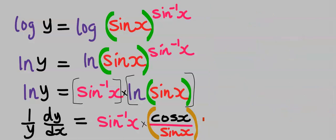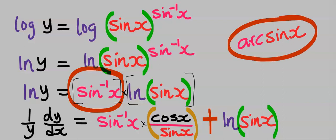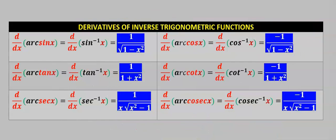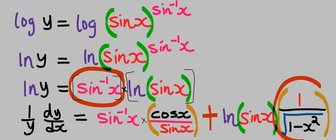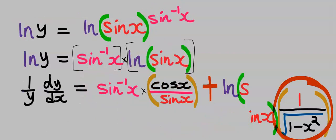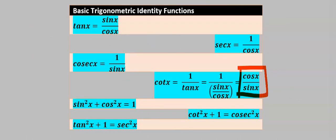Next, for the product rule we put a plus, then keep the natural log constant and differentiate sine inverse of x. Sine inverse of x is the same as arcsin x. From the derivatives of inverse trigonometric functions, when you differentiate arcsin x, you get 1 divided by the square root of 1 minus x squared. Also, cos x divided by sin x is the same as cot x from basic trigonometric identities, so we replace cos x over sin x with cot x.